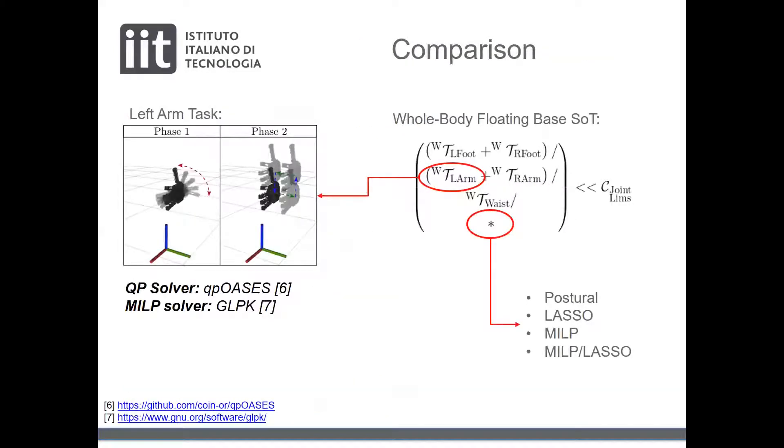We now consider a test problem on a humanoid bipedal robot where we want to achieve several tasks simultaneously organizing different priority levels. The first priority level contains the contacts with the environment. The second priority consists in controlling the pose of the hands of the robot. The third priority is the pose of the waist, and as a final layer, we put the introduced methodologies. We consider also joint limits constraints.